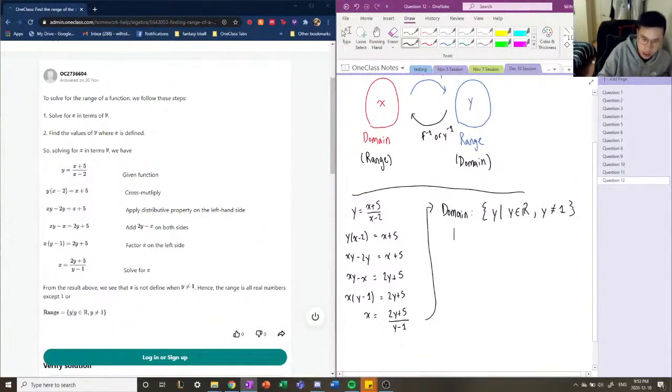And this is going to be our range. Because like I said, the domain of our inverse function is the range of our original function, and that's what we're trying to find. So this is the range of our function. Range of y equals x plus 5 over x minus 2 is y such that y belongs to all real numbers, except y cannot equal 1.